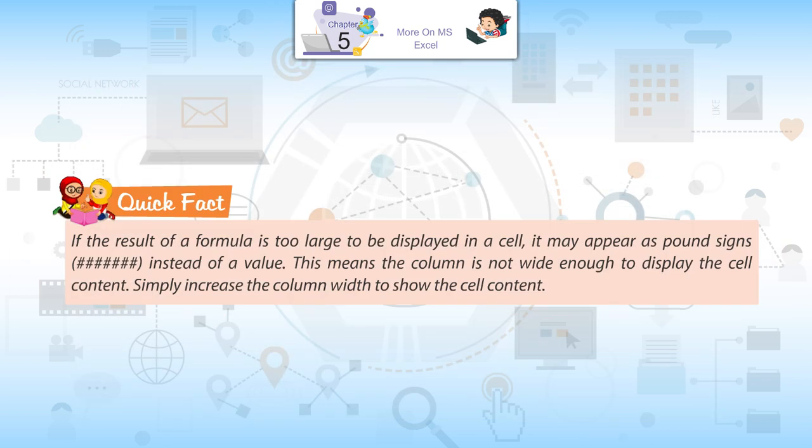Quick fact: If the result of a formula is too large to be displayed in a cell, it may appear as pound signs instead of a value. This means the column is not wide enough to display the cell content. Simply increase the column width to show the cell content.